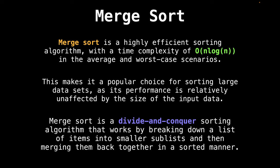What is merge sort? Merge sort is a very efficient sorting algorithm that runs in a worst case time complexity of big O of n log n. This makes it a popular choice for sorting large data sets, as its performance is relatively unaffected by the input size. It works as a divide and conquer sorting algorithm by breaking down a list of items into smaller sublists and then merging them back together in a sorted manner.